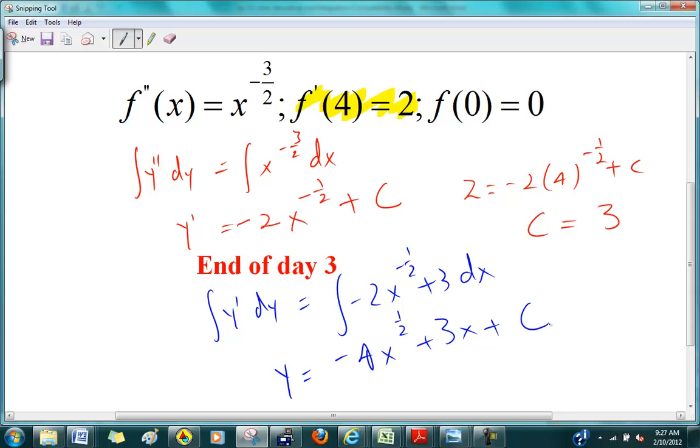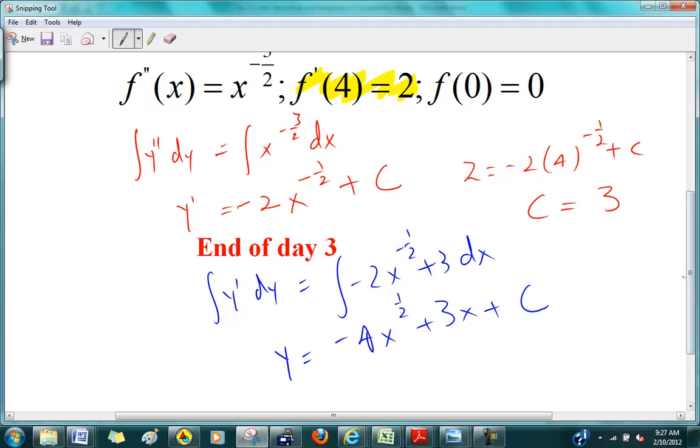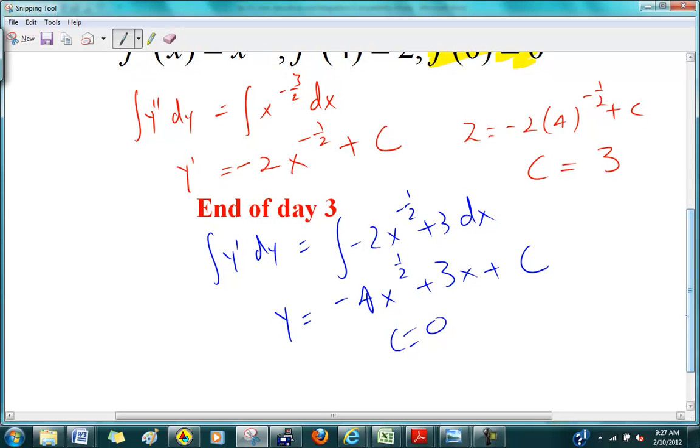Now, this is a different c. A different c. So, you might want to call one c1 and the other one c2. Whatever works for you. And then, you're going to put in the second condition now. You're going to put in this condition. When x is zero, y is zero. So, then c is equal to zero. So, notice that c is not your answer. Your final answer is an equation in y. Y equals minus four x to the one half plus three x. This is your final answer.